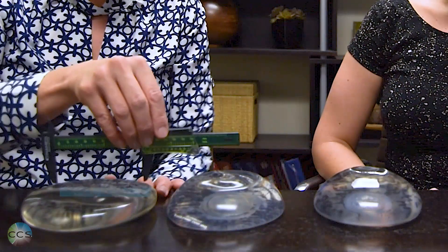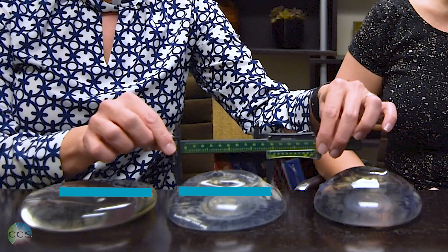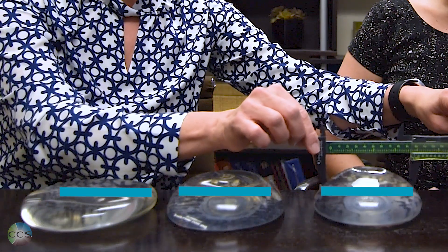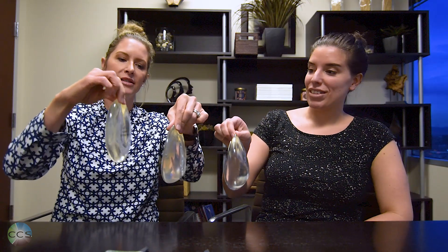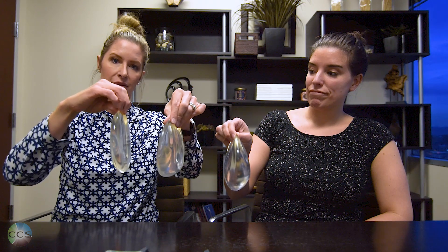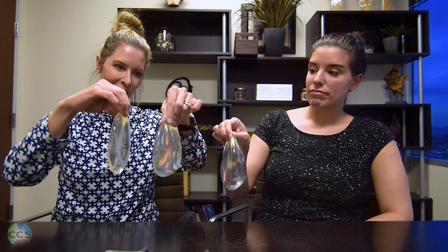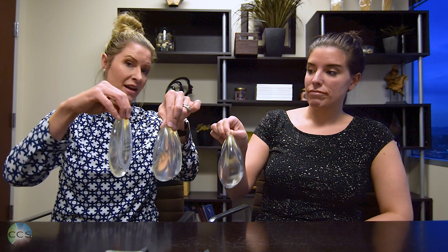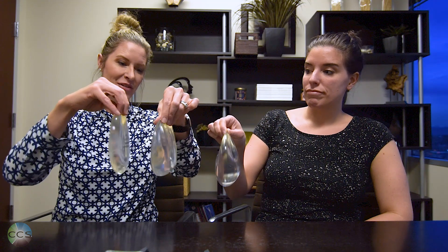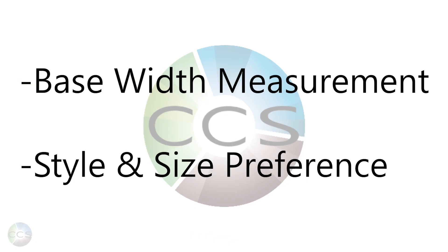If we move over to low profile, this is going to be way too wide for your base width. We're really trying to match your base width with your personal size preference. A lower profile is always going to be the least projected implant, so it doesn't push out, and it tends to be the wider of the implants within the same size range. The mid profile is somewhere in between the high and the low. The high profile is going to be the most projected and the most narrow of the three. It's a combination of your base width measurement and your style and size preference.